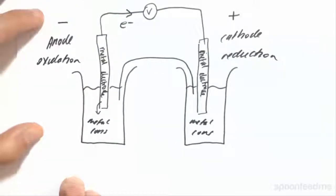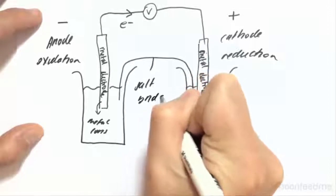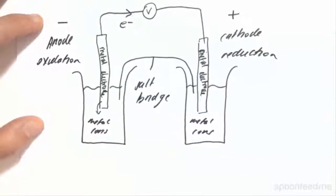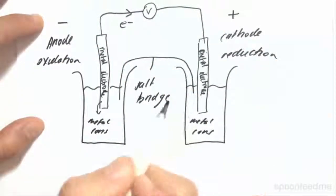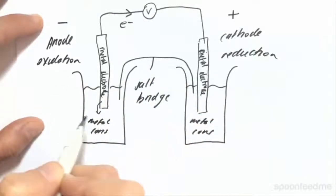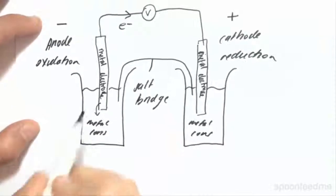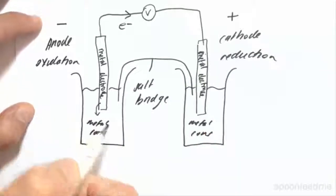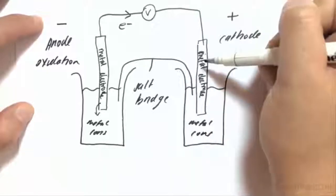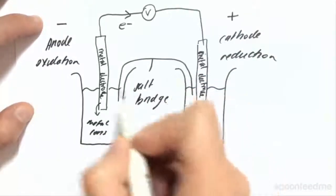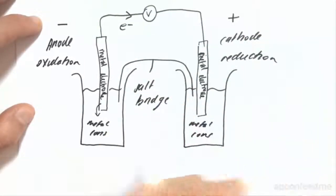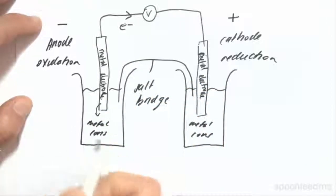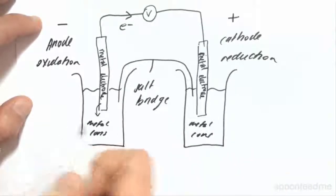The salt bridge — this in between here is known as a salt bridge. The salt bridge works to exchange charge in order to neutralize the half cells and it also completes the circuit. As we have electrons moving across here, we have ions moving across the salt bridge carrying charge, completing the circuit, whilst also ensuring that these solutions remain neutral. The solution at the anode is becoming more positive as metal ions enter it, and the solution at the cathode is becoming more negative as metal ions leave. Exchange of ions through the salt bridge — positive ions moving one way, negative ions the other — keeps both solutions neutral.